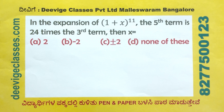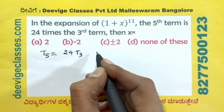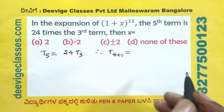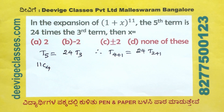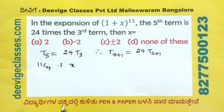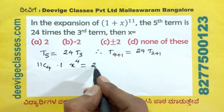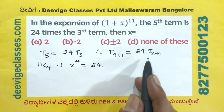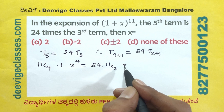Next question: In the expansion of 1 plus x power 11, the fifth term is 24 times the third term; find x. So T5 equals 24 times T3, therefore T4 plus 1 equals 24 times T2 plus 1. T4 plus 1 is 11C4 times 1 power 7 times x power 4, equal to 24 times 11C2 times x power 2.